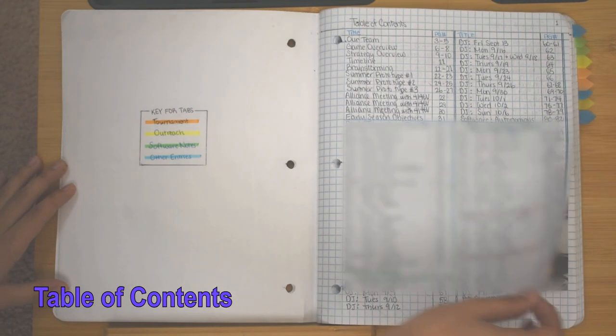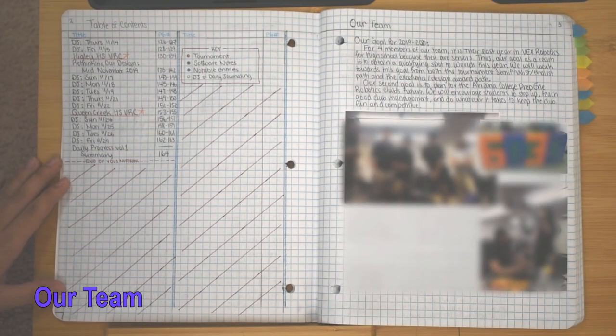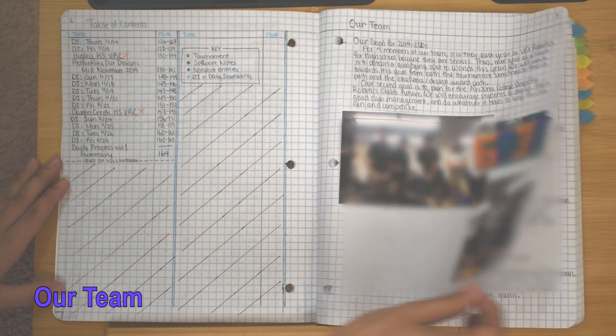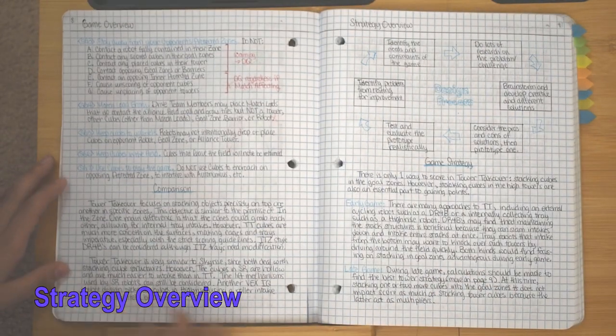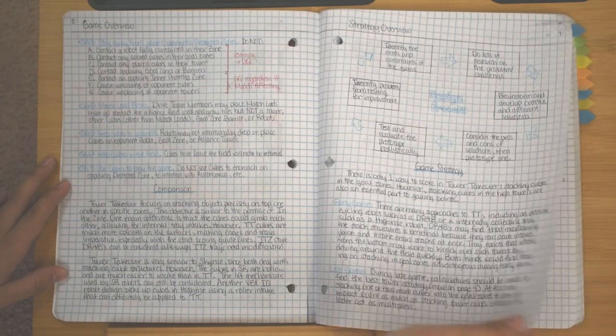On the very first pages, we had a key for the color tabs and the table of contents. We wrote an extensive introduction section covering our team information, an overview of the game and its rules, possible strategies to implement, our design process, and a tournament timeline.